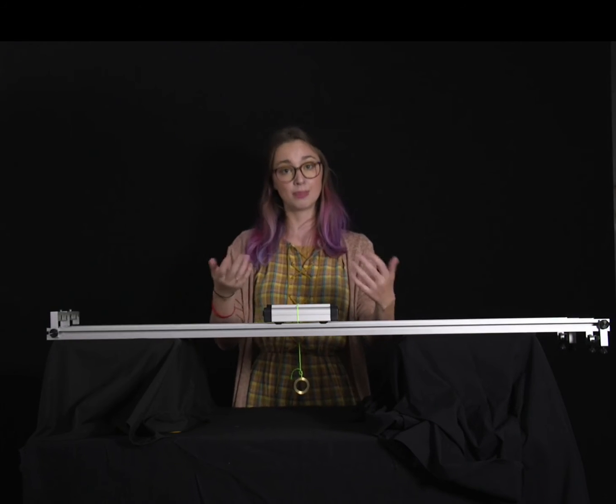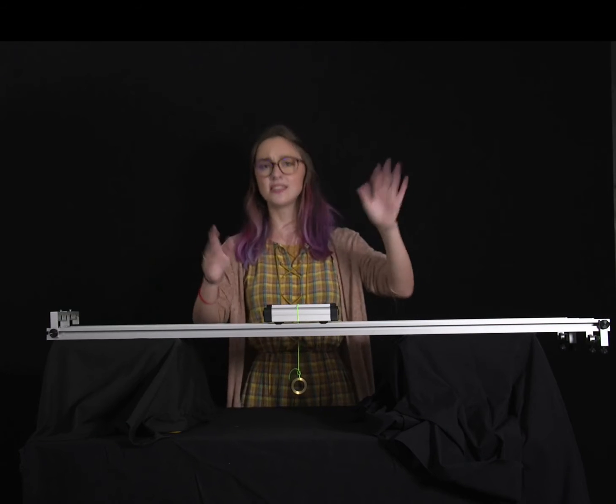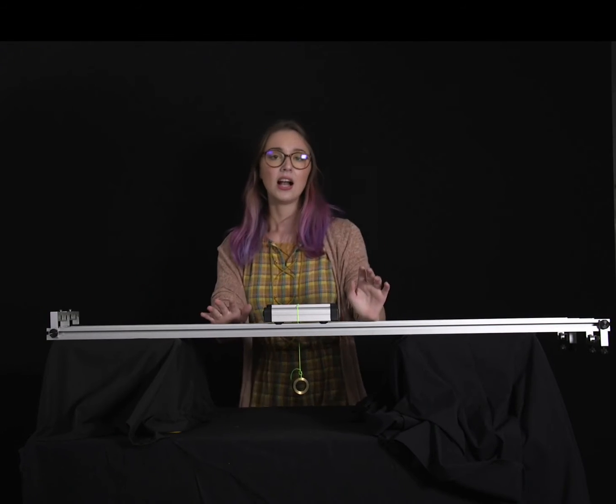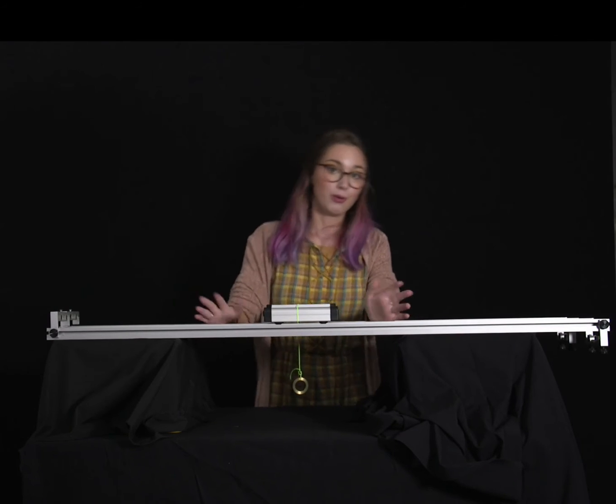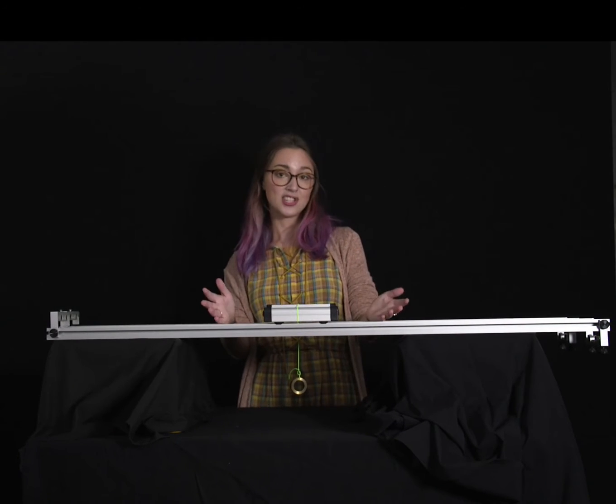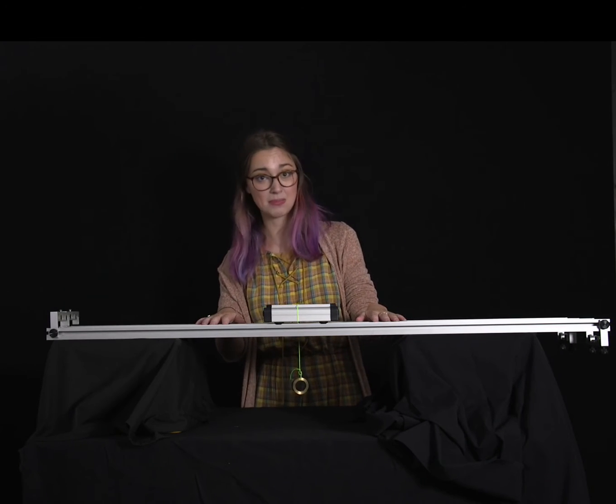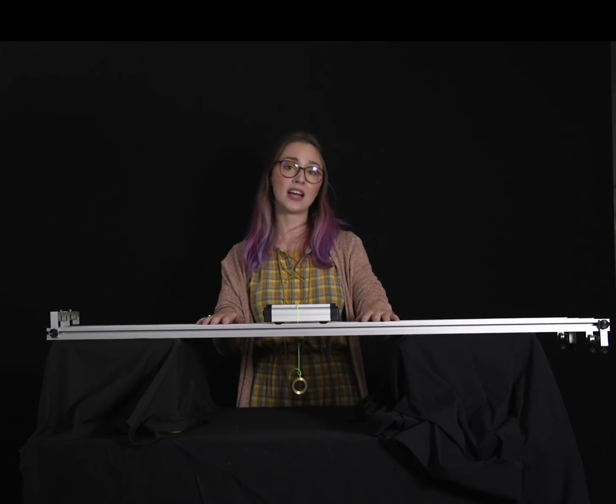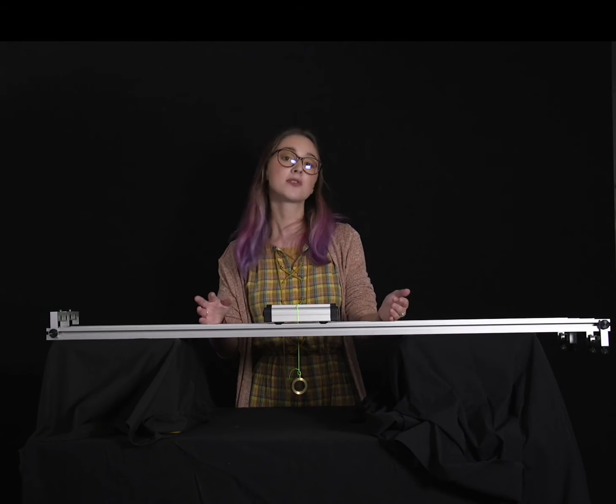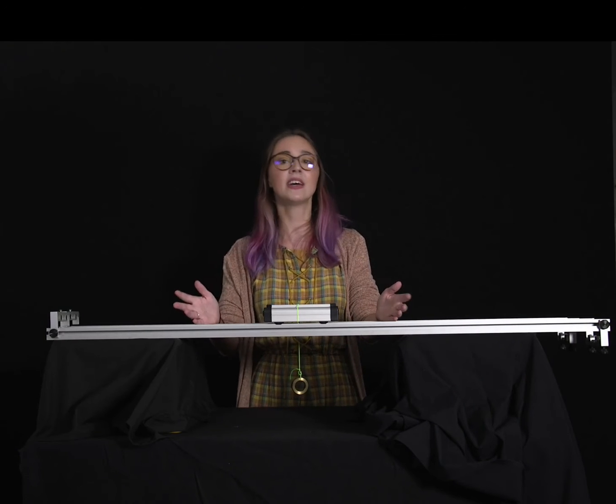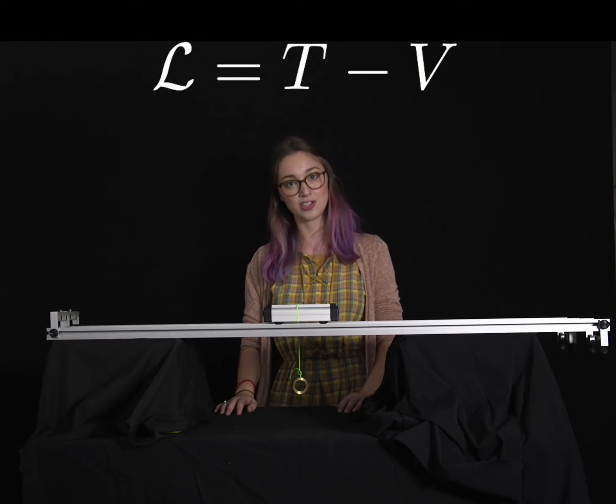So when Maupertuis first defined his principle he used this quantity T and it turns out this quantity T is actually our kinetic energy. So we can define our kinetic energy, instead of using K we use T because we like to be special sometimes. We also need to involve our potential energy. Potential energy in this case we'll take as V. So we can define our Lagrangian quite simply as L equals T minus V where T is our kinetic energy and V is our potential energy.